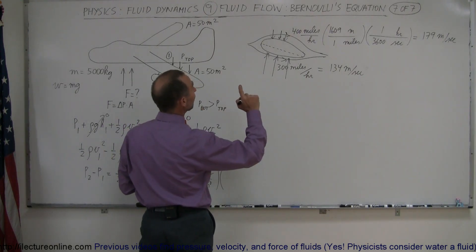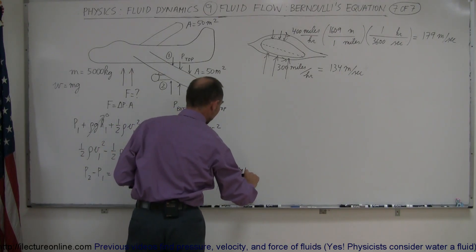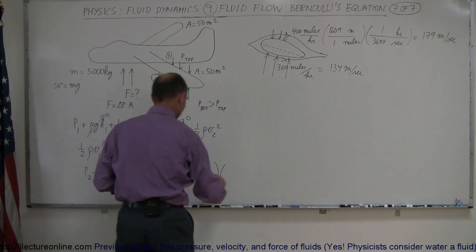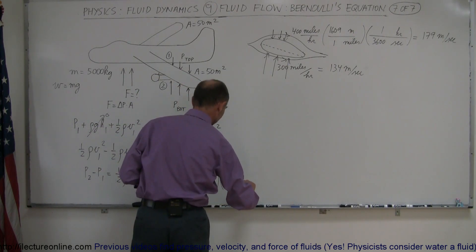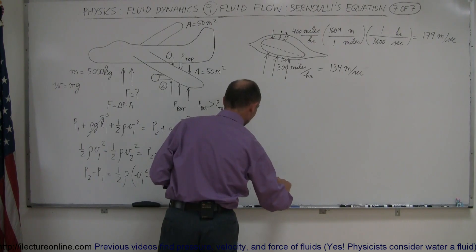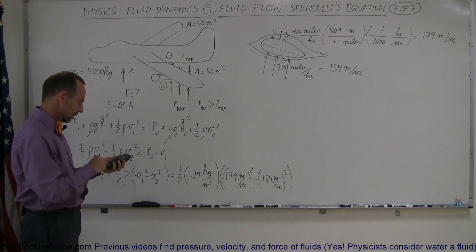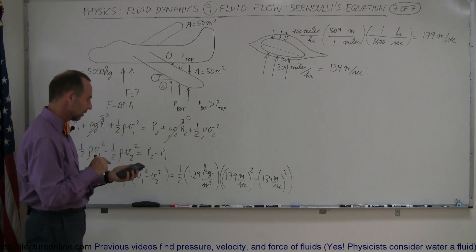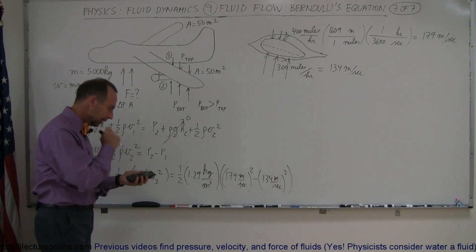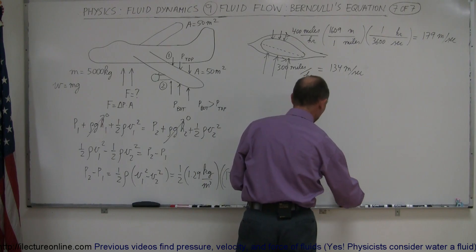And then multiply times V1 squared. Now, V1 would be, let's see, the V at the top, that would be the 179 meters per second squared. And, I'm not dividing anything here, let me write that again. So, that would be 179 meters per second. I have to square that like that, minus the speed at the bottom, which is 134 meters per second, and we have to square that as well. Alright, so let's do that now. So, 179 squared minus 134 squared equals, multiply times 1.29, and divide it by 2. And what do we get?